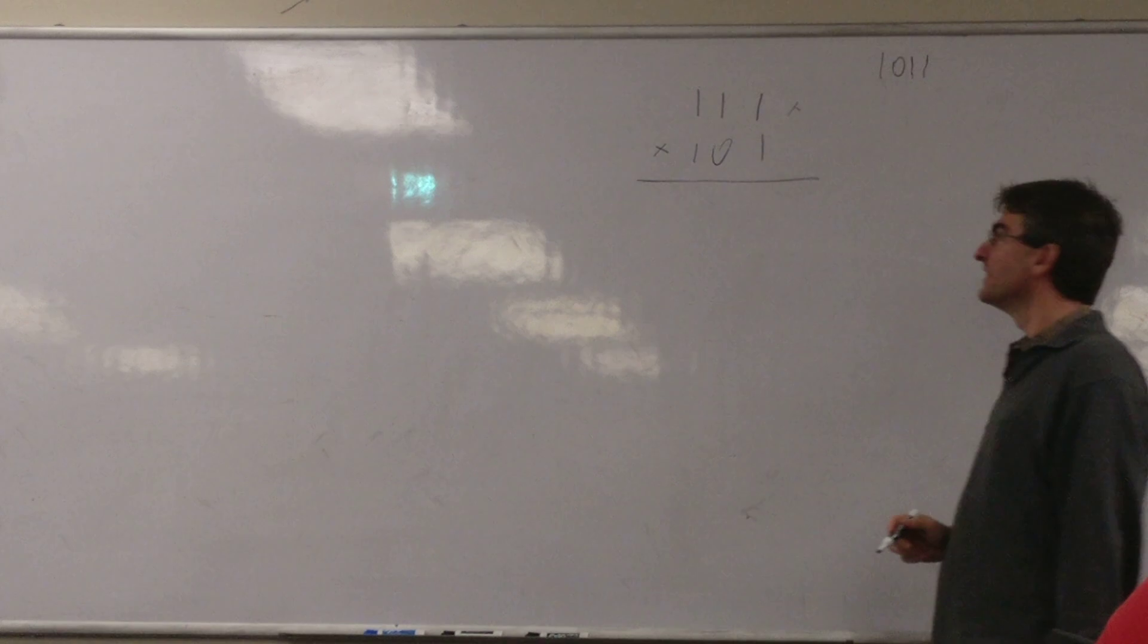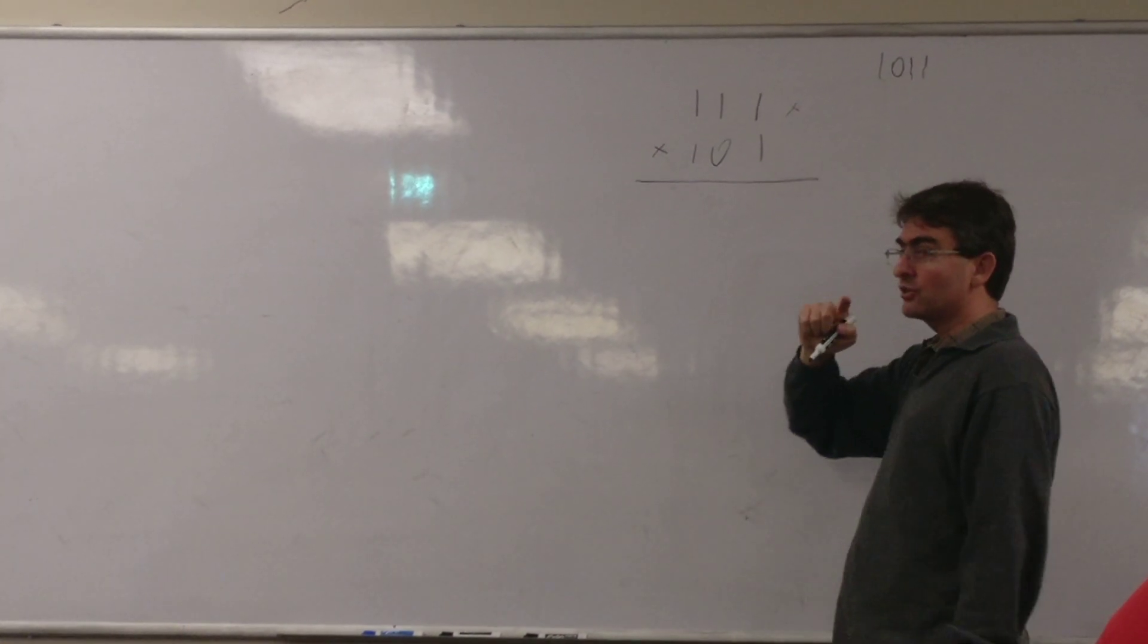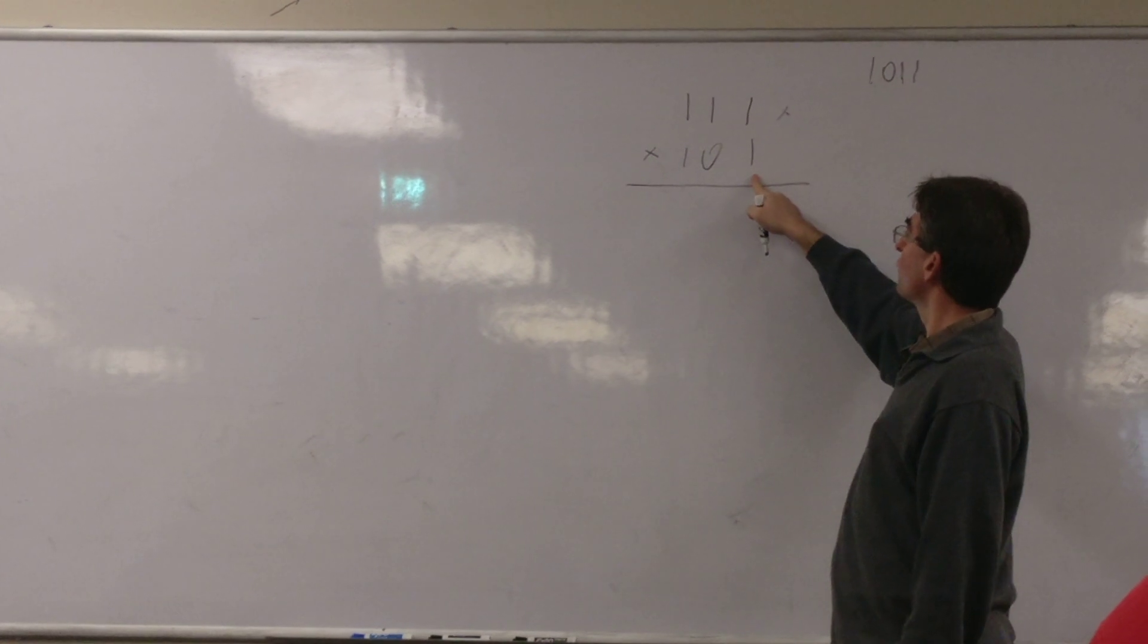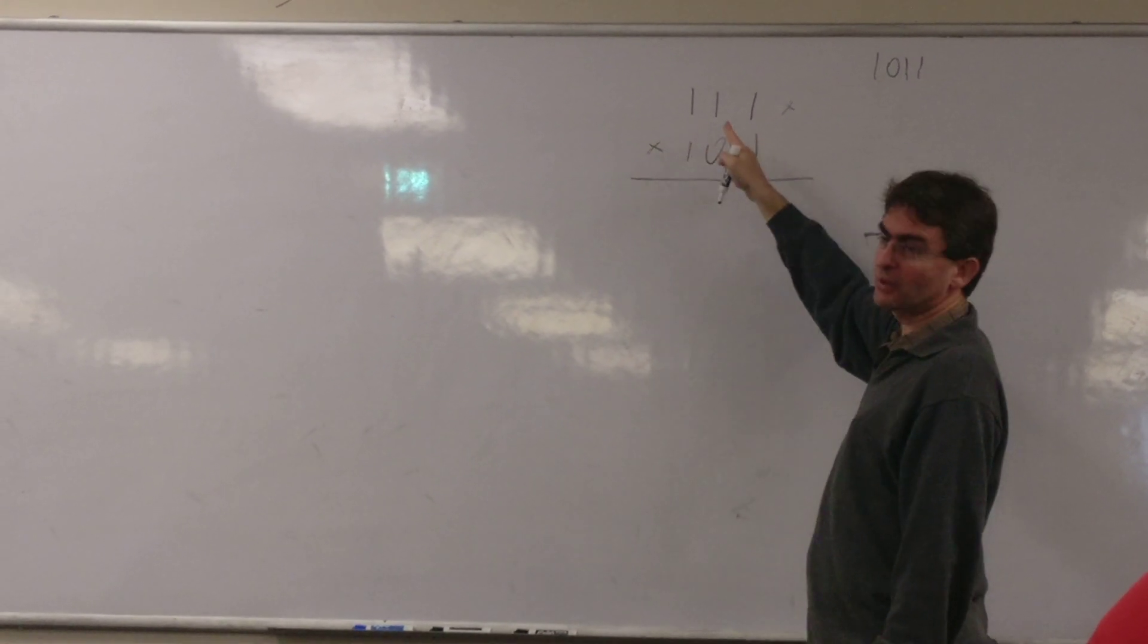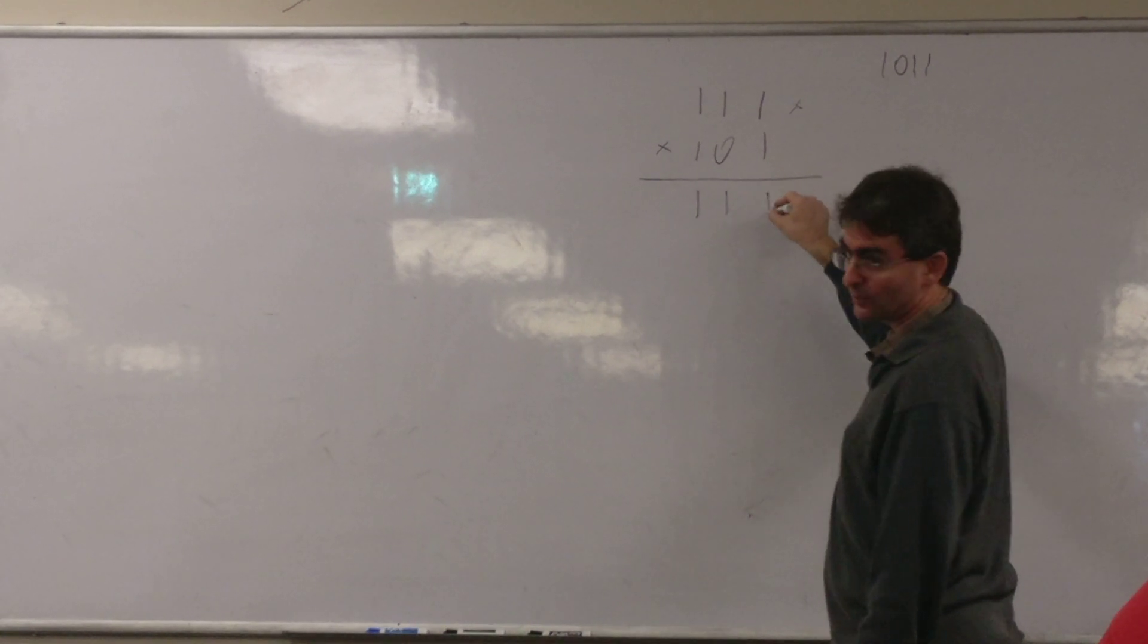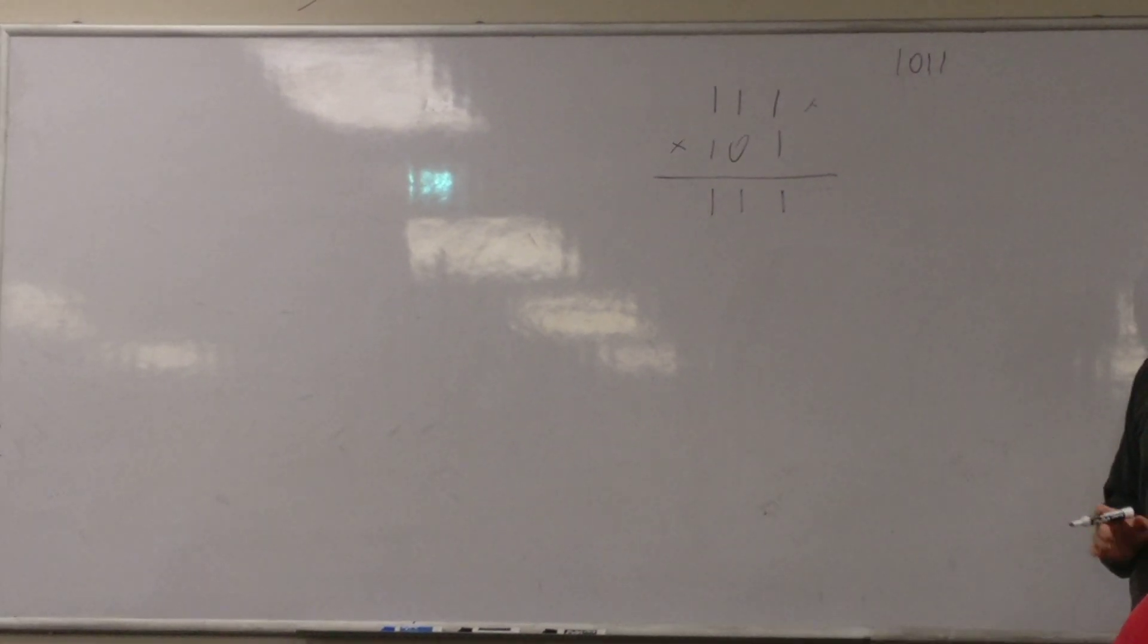So we are going to multiply first as usual 1 times x squared plus x plus 1 and you get x squared plus x plus 1 which we for simplicity write just like this.